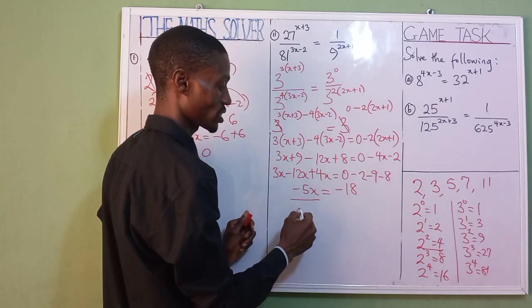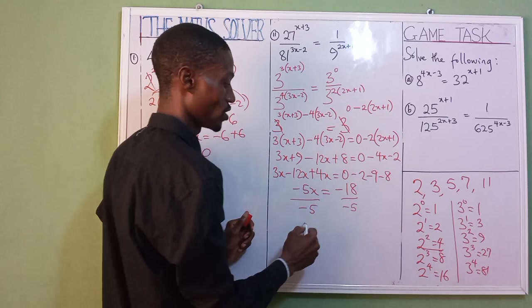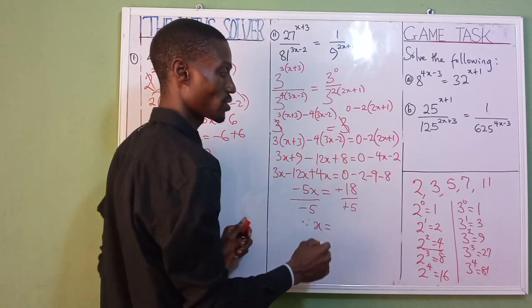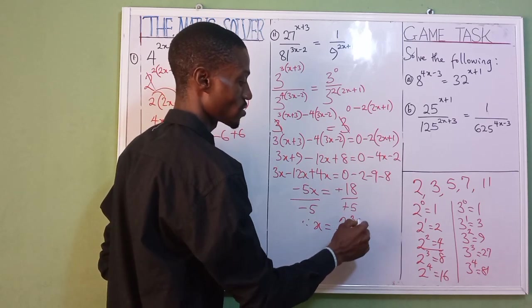Now we divide both sides by minus 5. So therefore, your x equals minus 18 over minus 5, which is 18 over 5.